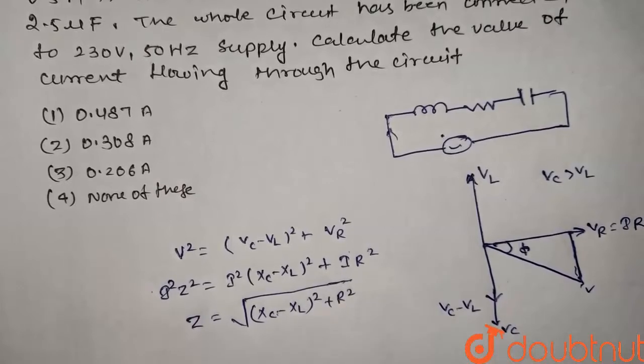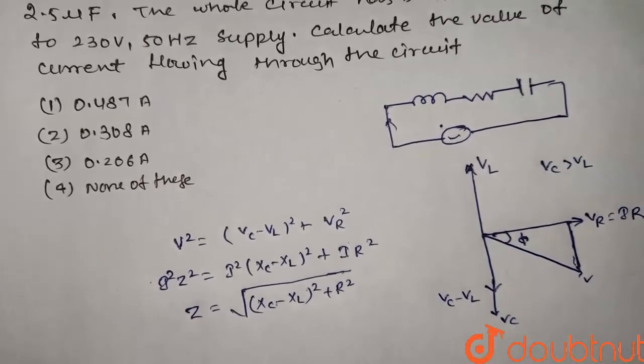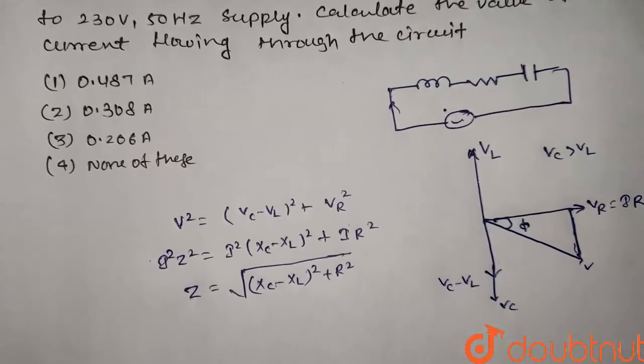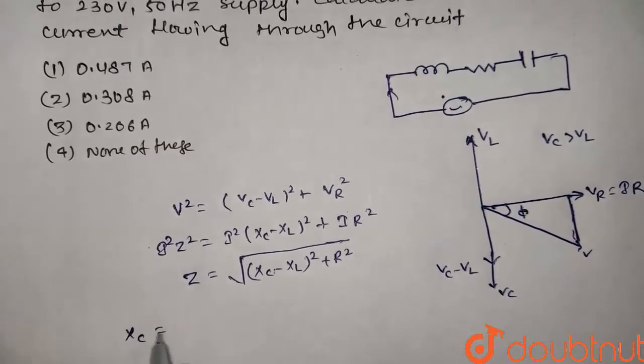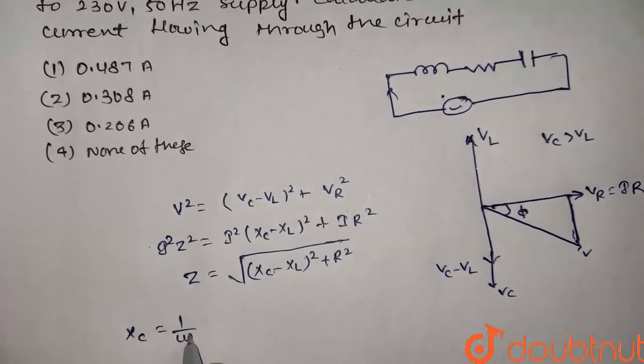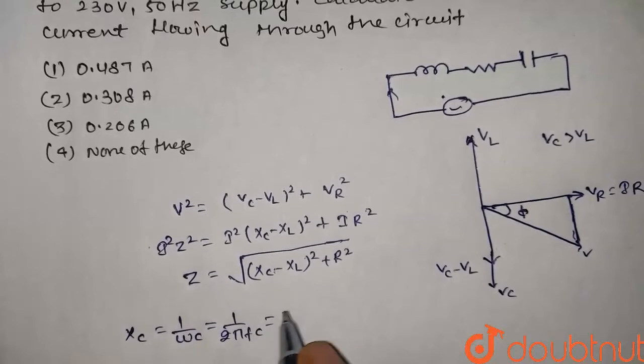Now we need to find Z value, so first we need to find XC and XL. XC is equal to 1 by omega C, which is 1 by 2 pi f C.